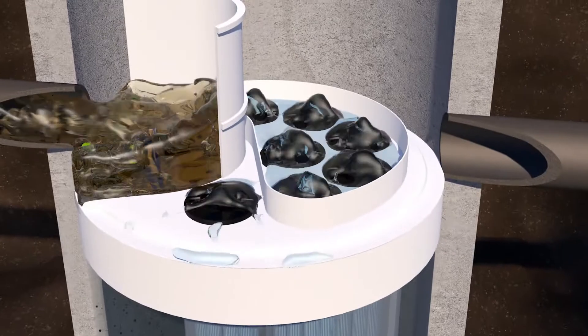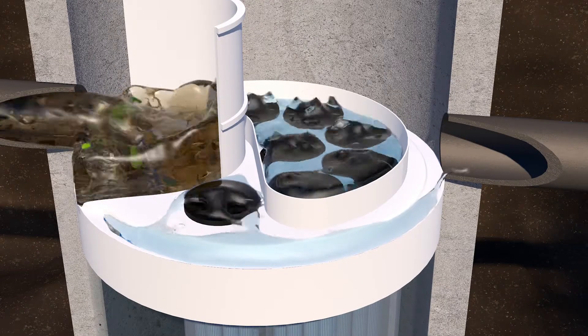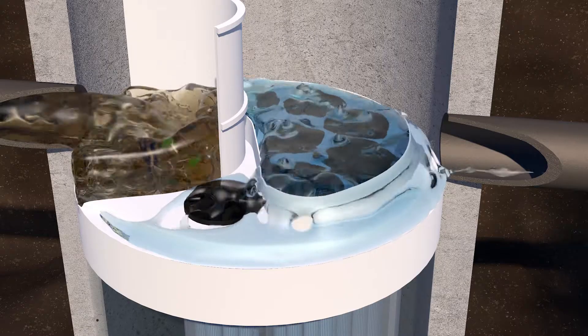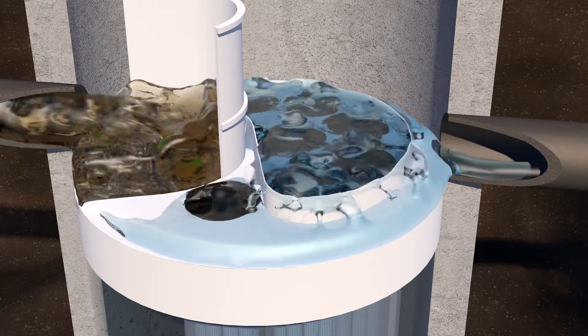Water is forced up from the treatment chamber through membrane filtration and into the backwash pool. Once the water has filled the backwash pool, water overflows the weir and exits via the outlet pipe.